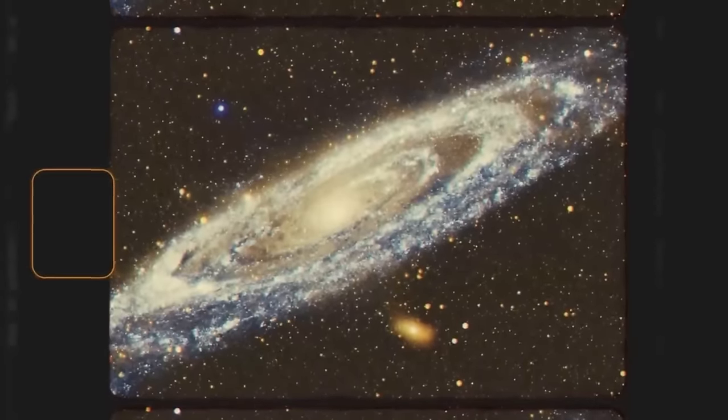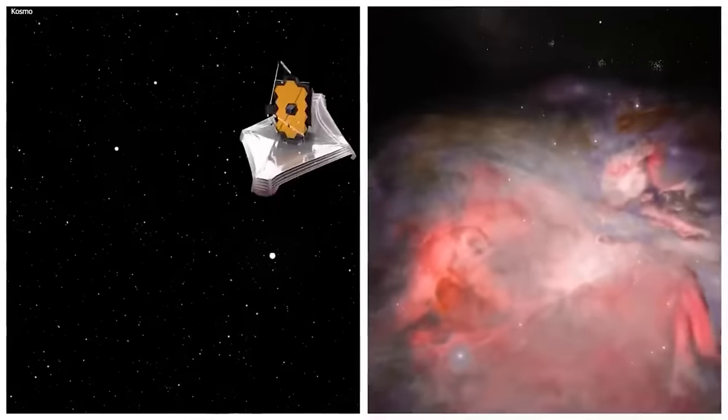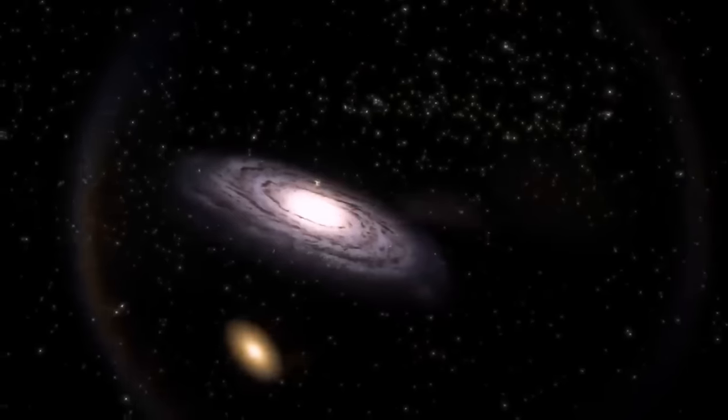In the 1920s, Edwin Hubble's observations with the 100-inch Hooker Telescope showed that Andromeda, along with other distant nebulae, was not part of the Milky Way but a separate galaxy in its own right.